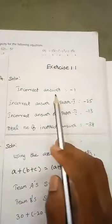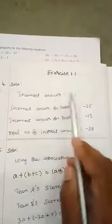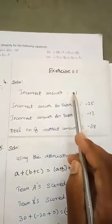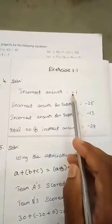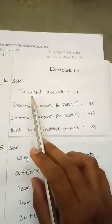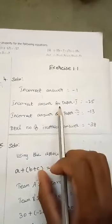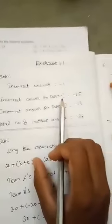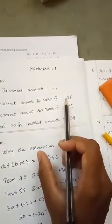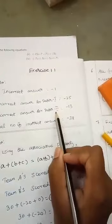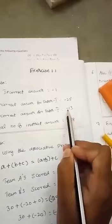Each incorrect answer have reduced the 1 mark. So, incorrect answer, we are going to put a negative sign. If we give the correct answer, we are going to put a positive sign. The given question is incorrect answer, so we are going to put a negative sign. In paper 1, she incorrectly write the 25 questions, so we put minus 25. In paper 2, 13 questions in negative, so minus 13.